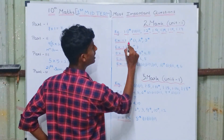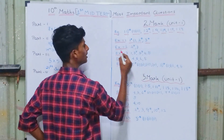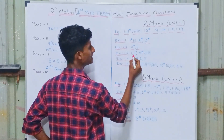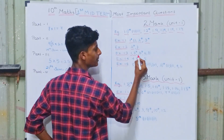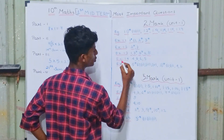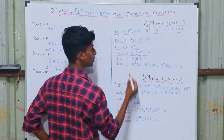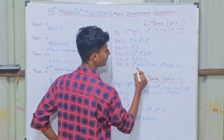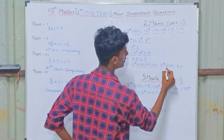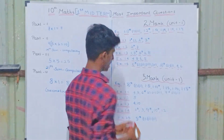Exercise 1.1: 1st sum 1st subdivision, 2nd sum and 3rd sum. Exercise 1.2: 2nd sum and 3rd sum. Exercise 1.3: 1st sum, 3rd sum (very very important), 5th sum (very very important), 6th sum and 8th sum important. Exercise 1.4: 4th sum, 5th sum, 6th sum, 8th sum. Exercise 1.5: 1st sum — 1st, 2nd, 3rd, 4th subdivisions — 2nd sum, 1st subdivision, 2nd subdivision, 4th sum and 6th sum.